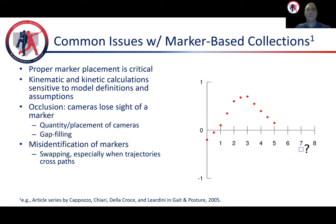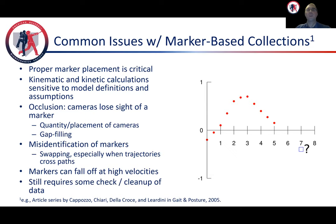Another common issue is misidentification of markers. You may see marker swapping, especially when their trajectories cross paths. We often see this with the markers on the throwing wrist, and markers may fall off during the collection. So despite much of the tough work being automated now, it can still require some double checking and cleanup.